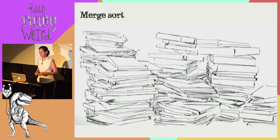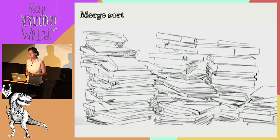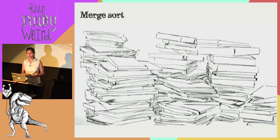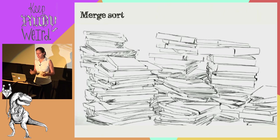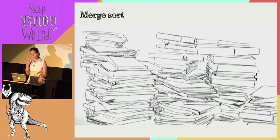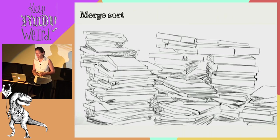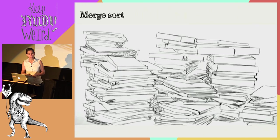Third approach: pull all the books off the shelves, but this time divide and conquer. We divide them into two stacks and sort each stack the same way. Once we have two sorted stacks, it's easy to merge them back onto the shelf — just compare the top two books, decide which goes first, and continue with the rest. This is called merge sort — slightly better.